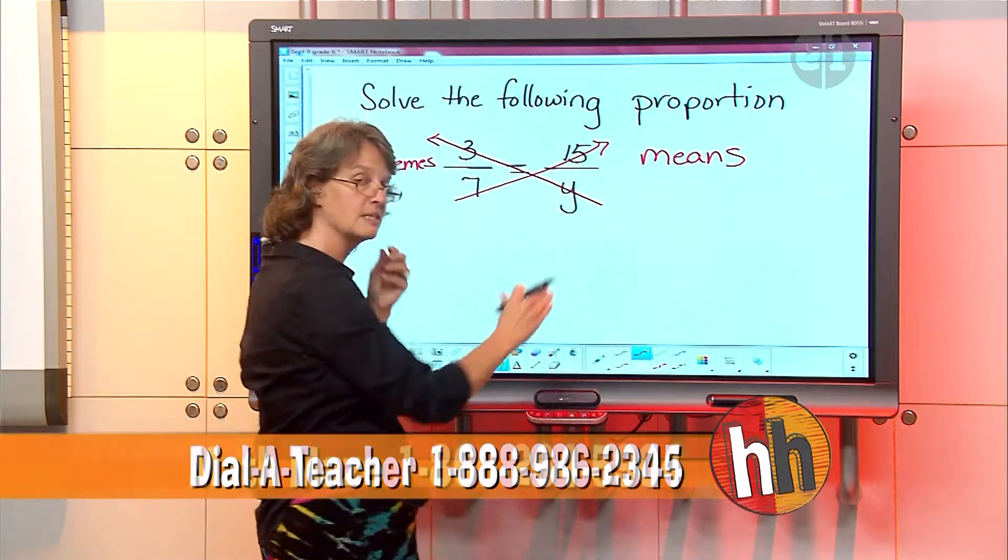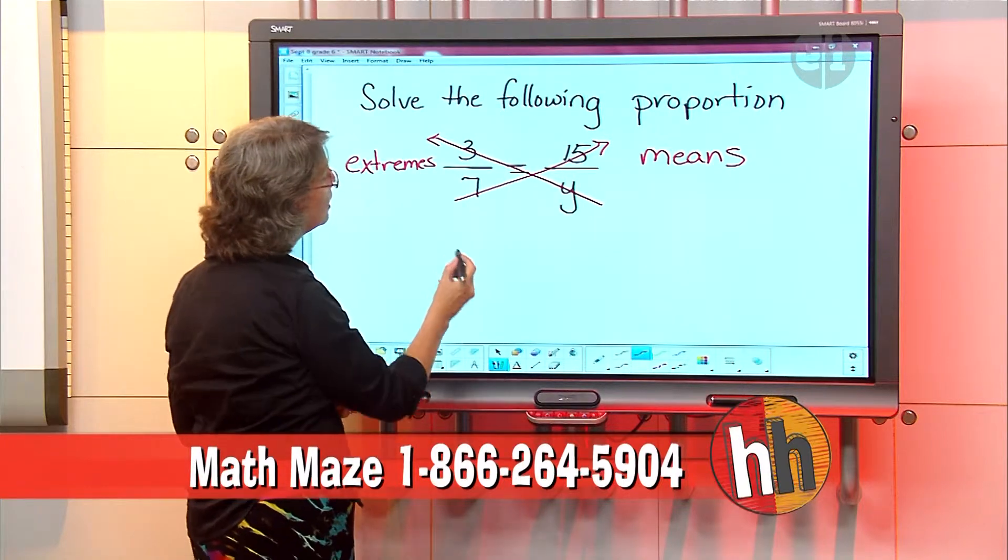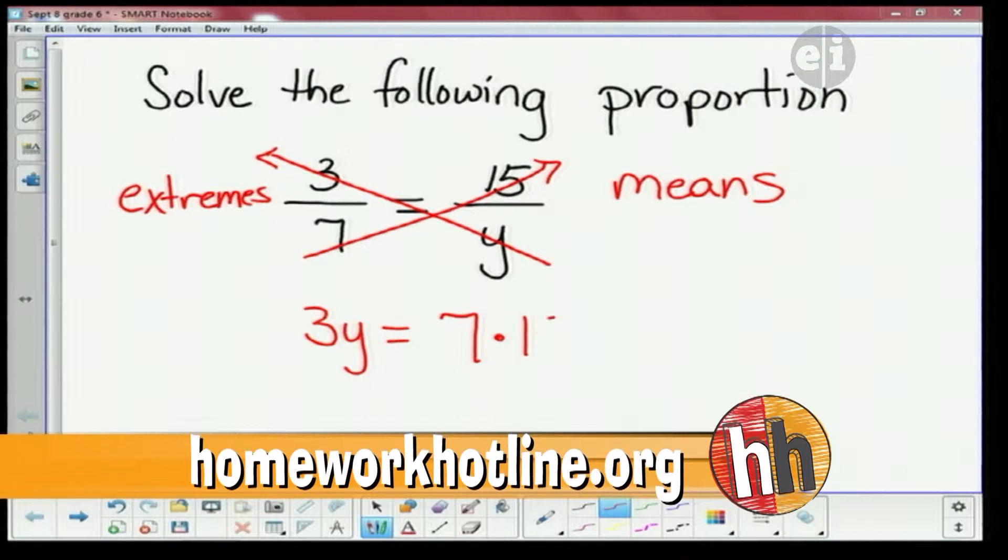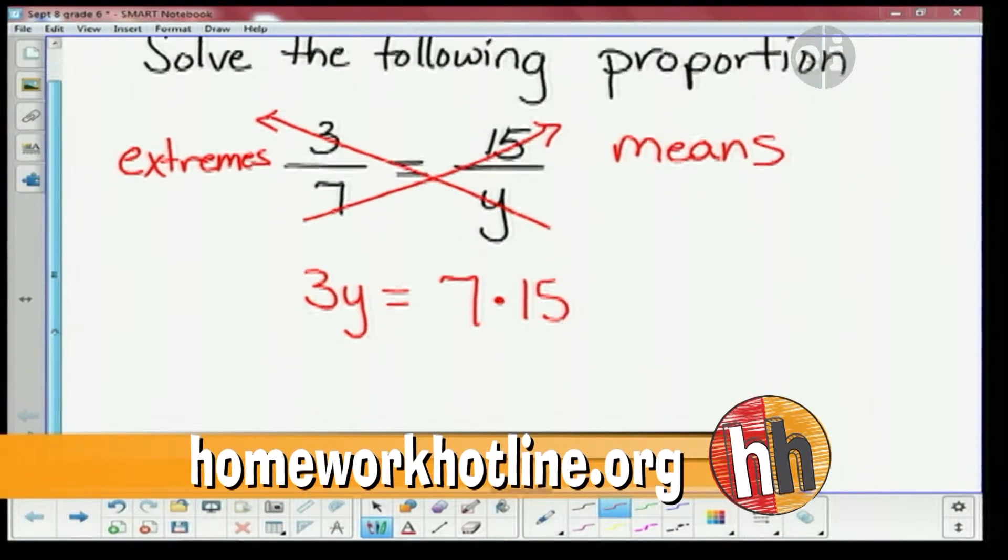Now let's solve this question. We're gonna cross multiply just like I wrote. We have 3y on the side and then we have 7 and 15. And what we do is we're gonna multiply it out, so 7 times 15.